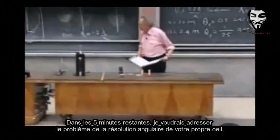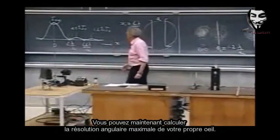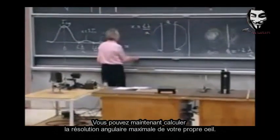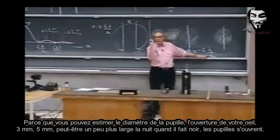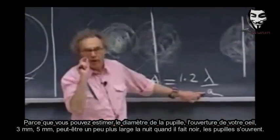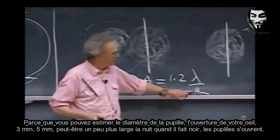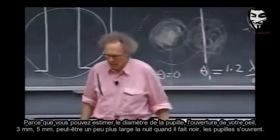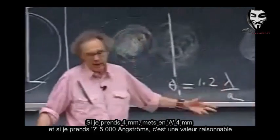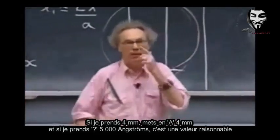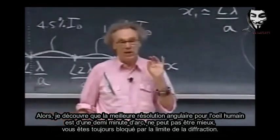So in the remaining five minutes, I want to address the issue of the angular resolution of your own eye. You can now calculate what the ultimate angular resolution is of your own eye, because you can estimate what the diameter is of the pupil, the opening of your eye — three millimeters, maybe five millimeters, a little bit larger at night when it is dark. We can calculate what this is. If I take four millimeters for A, and if I take lambda as 5,000 angstroms — it's not an unreasonable value — then I find that the best angular resolution of a human eye is half an arc minute.